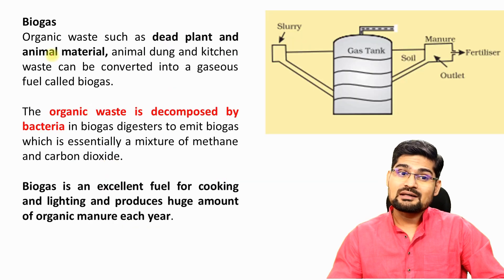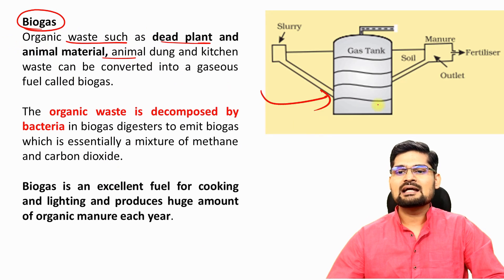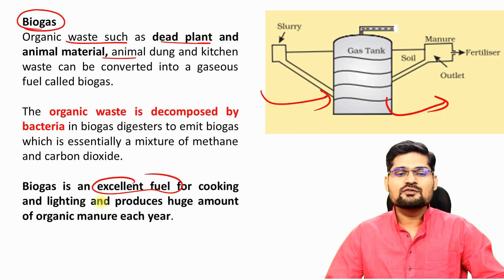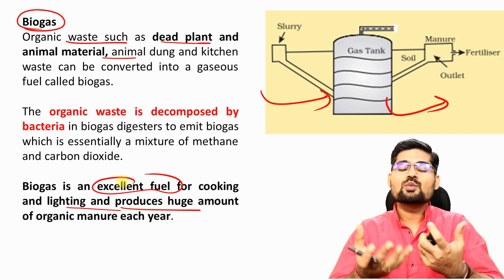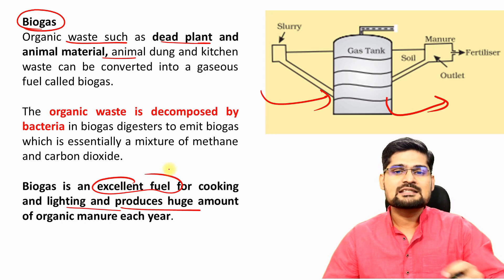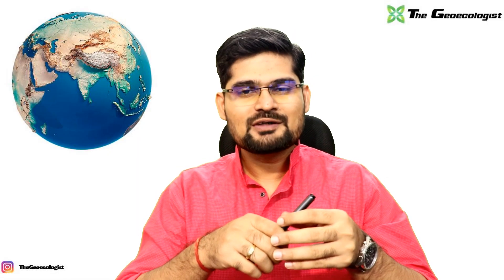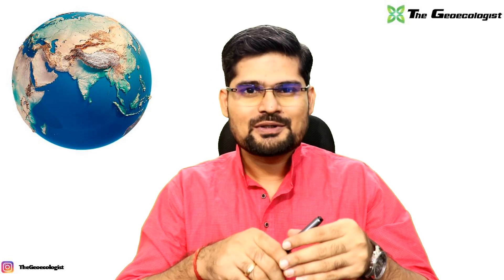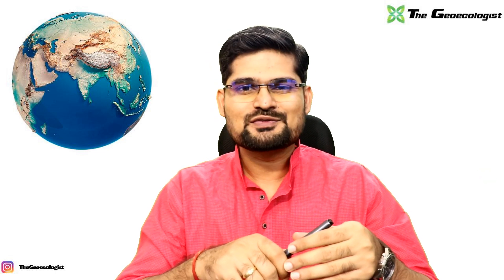Biogas is produced from organic waste material of plants and animals in a gas tank and is used for cooking and electricity generation. Biogas is an excellent fuel for cooking and lighting and also produces large amounts of organic manure. With increasing waste generation, biogas represents an important and already widely used alternative energy area. In coming sessions on economic geography, more topics will be covered, so stay tuned, stay safe, and keep learning.